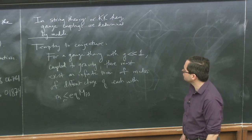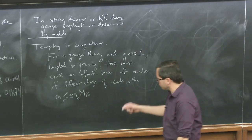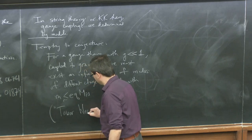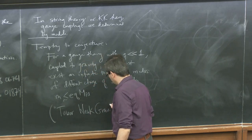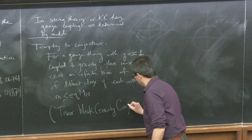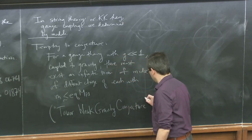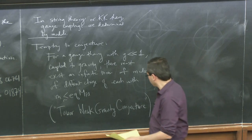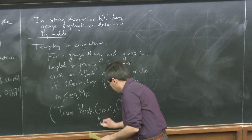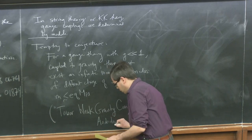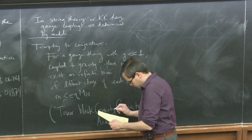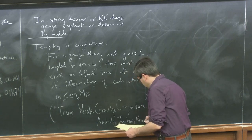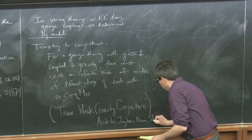I'm not claiming that this statement follows from other statements I've made — I'm just saying that given the examples we have and the other statements, it's tempting to guess this is a general phenomenon. The statement in this loose form is something we might call the Tower Weak Gravity Conjecture, and that particular name was used in a paper by Andriolo, Junghans, Noumi, and Shiu last year.